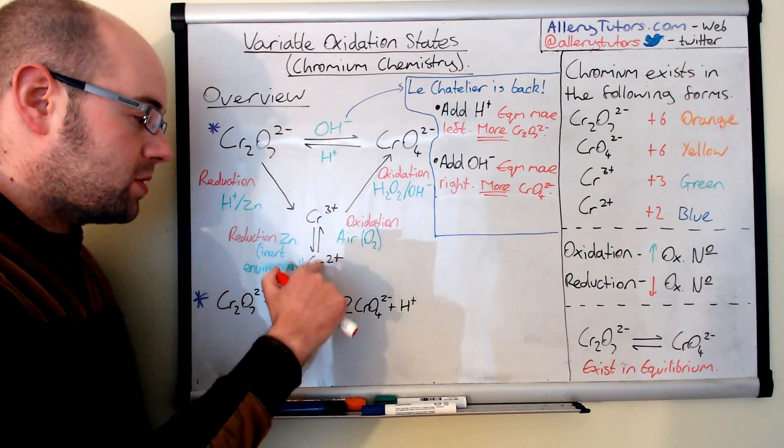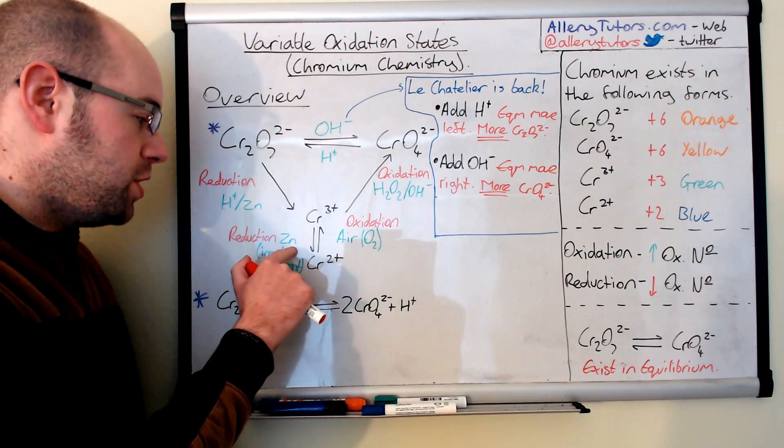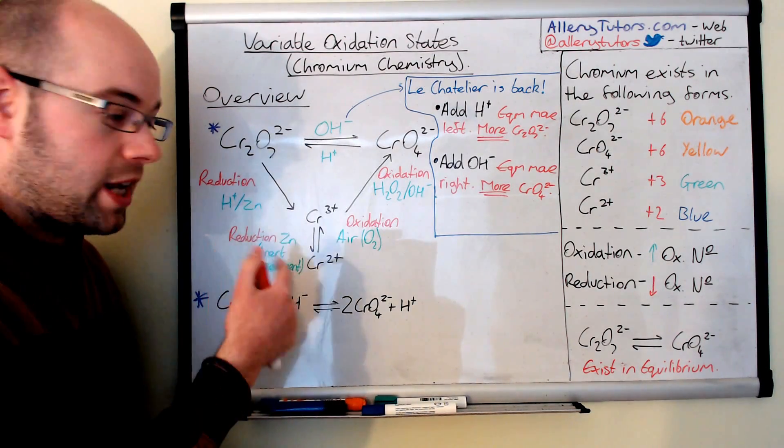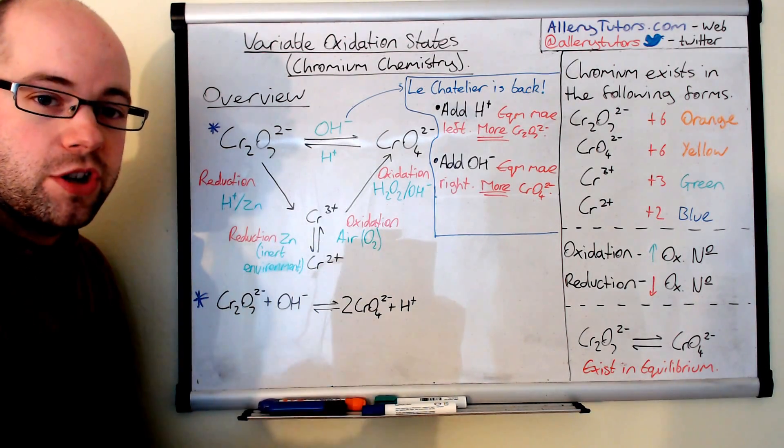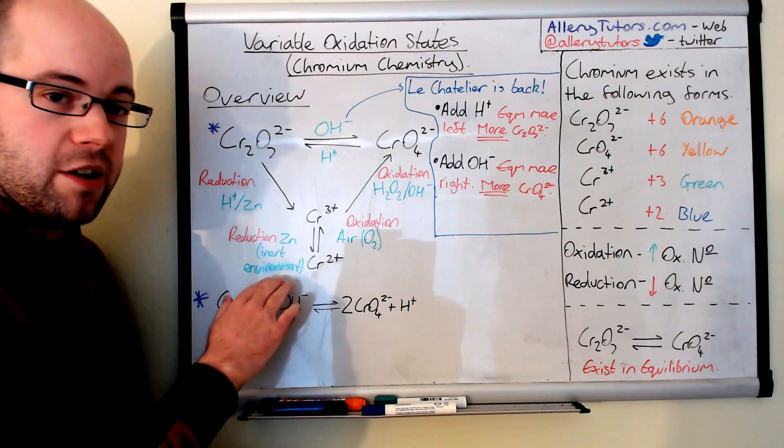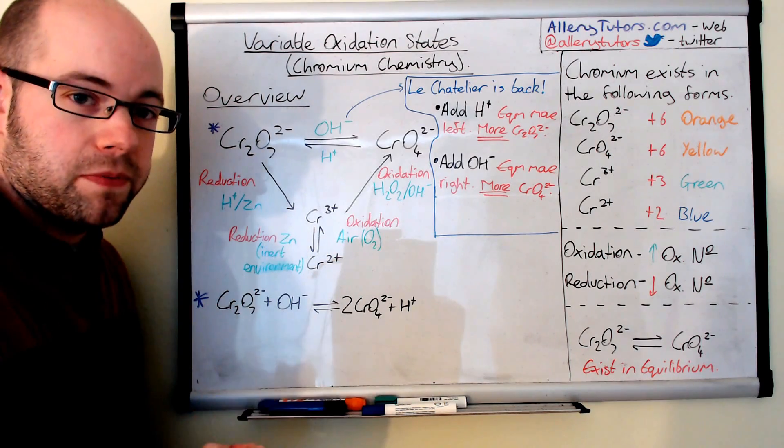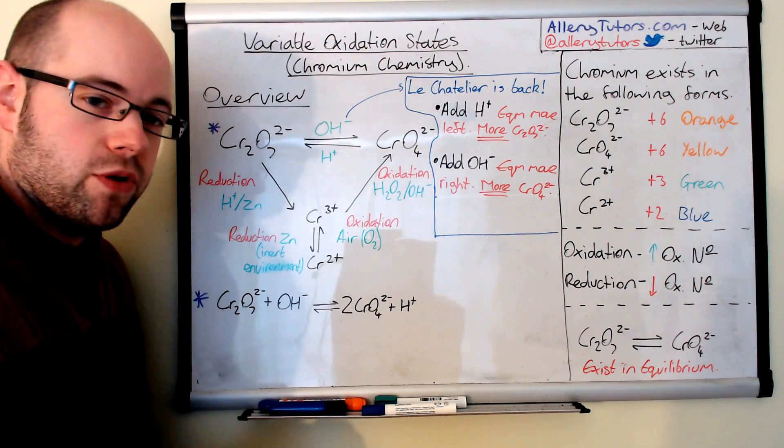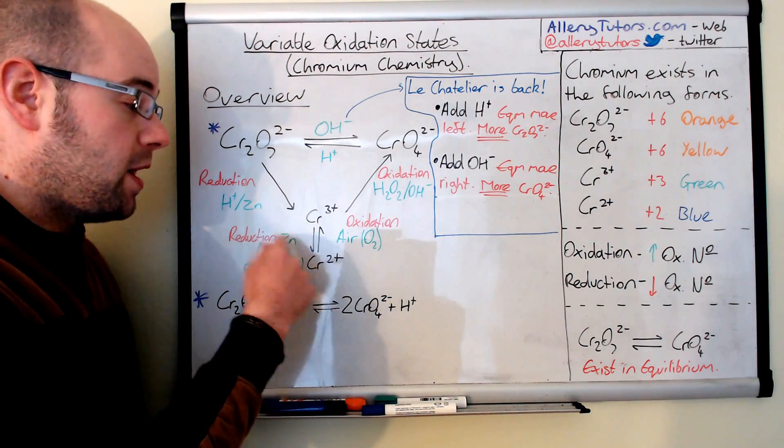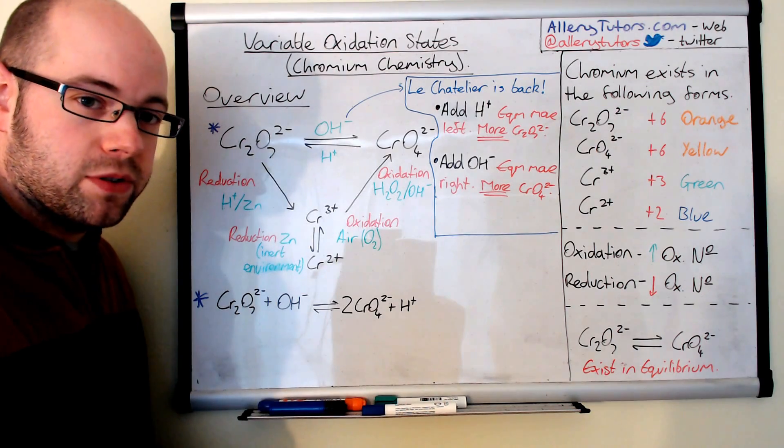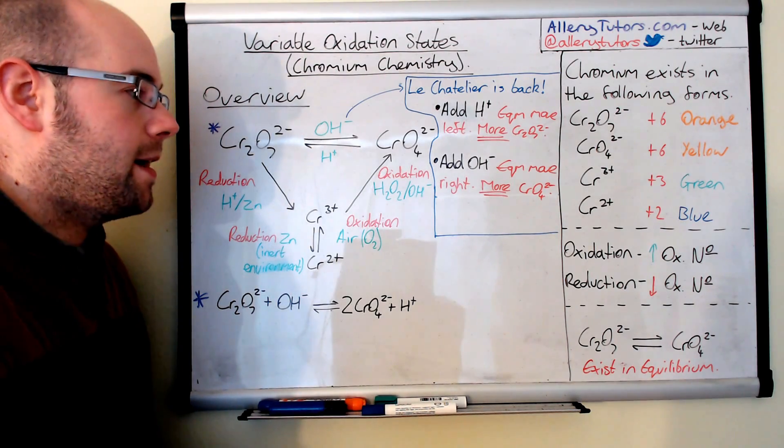And so that's why, when you're going from Cr³⁺ to Cr²⁺, we use zinc as our reducing agent, but we have to do it in an inert atmosphere or an inert environment. So that could be something like nitrogen or argon gas that we could use, and then we could form our blue chromium complex. But if we didn't, it'd be very difficult to form the chromium 2+ in that case.